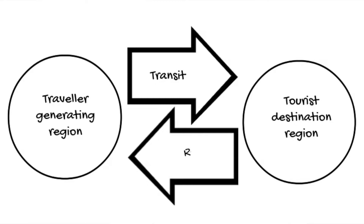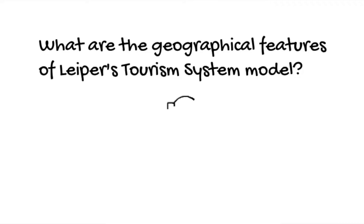Leipa identifies three major geographical features: the traveller generating region, the tourist destination region, and the tourist transit region. At the very heart of his model is the tourism industry itself.